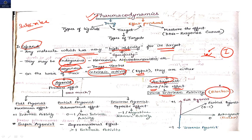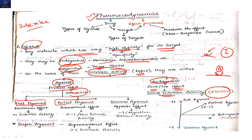Blockers have zero intrinsic activity — they come and block the receptor, producing no effect. When we talk about agonists, they do produce an effect, and on the basis of how much effect they produce, agonists are divided into three categories: full agonist, partial agonist, and inverse agonist.